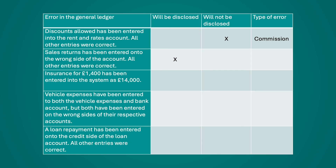Then: insurance for £1,400 has been entered into the system as £14,000. Since there's nothing to suggest only half the transaction was wrong, we can assume the entire transaction was entered as £14,000. This would not be disclosed by the trial balance, as there would be an equal debit and credit entry — albeit for the wrong amounts — and therefore no imbalance. This falls under an error of original entry, as both figures were entered incorrectly in the first instance.